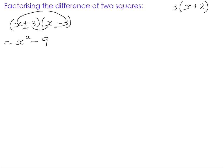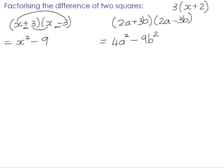Let's have a look at another one: 2a plus 3b and 2a minus 3b. Again, the brackets are exactly the same — one is a sum and the other is a difference. So we only need to multiply the firsts and the lasts. 2a times 2a is 4a squared, and positive 3b times negative 3b is negative 9b squared.